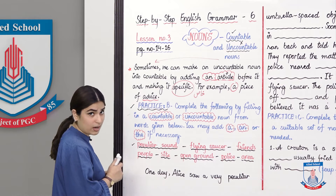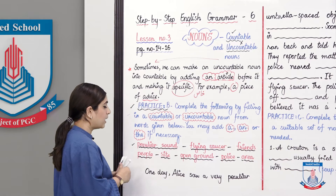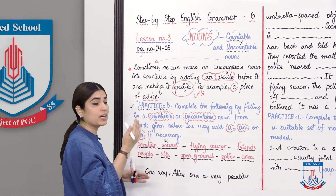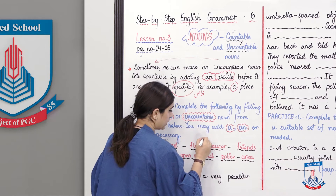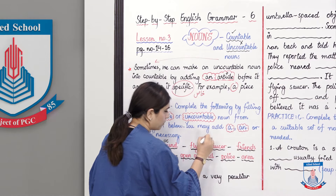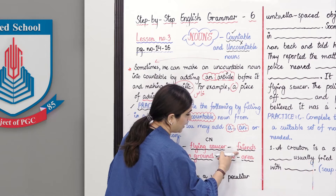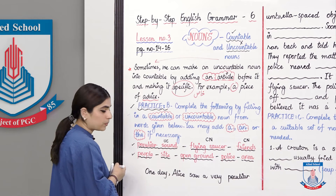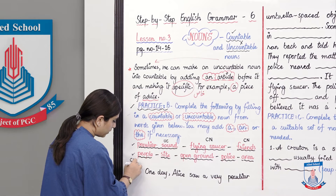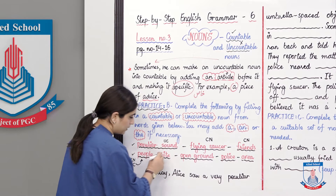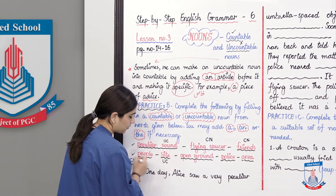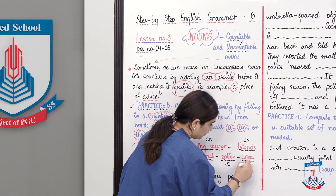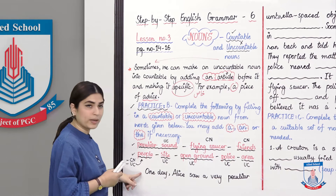You have to use either a countable noun or uncountable noun and add articles where needed. The given words are: 'peculiar sound' — you cannot count sound, so it is an uncountable noun (UC). 'Flying saucer' — countable noun (CN). 'Friends' — countable noun (CN). 'People' — can be both countable and uncountable. 'Site,' 'open ground,' 'police,' and 'area' are all uncountable.